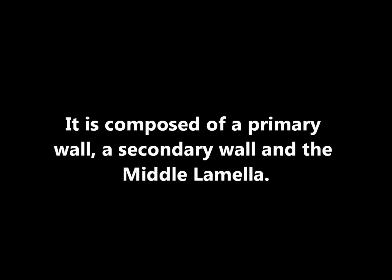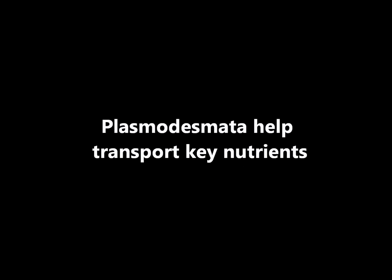So all in all, what we have learned is that the cell wall provides support and stability for the plant. It is permeable, allowing it to receive vital nutrients and proteins. The cell wall is composed of a primary wall, a secondary wall, and the middle lamella. Plasma Desmata helps transport nutrients to or from a cell to the next, and about the apoplastic and symplastic pathways.